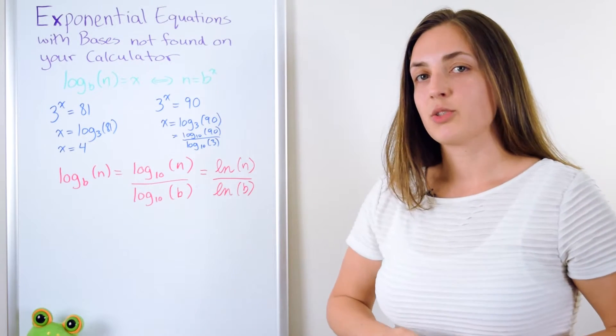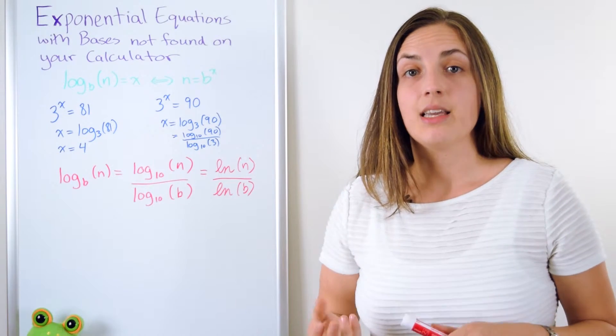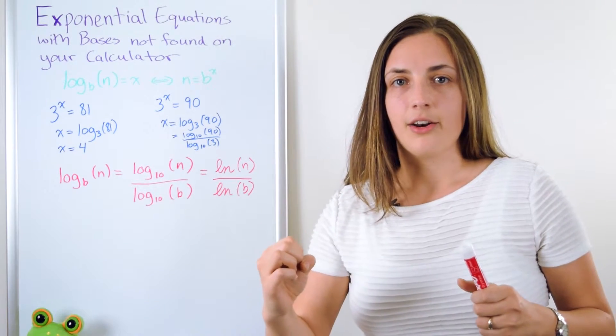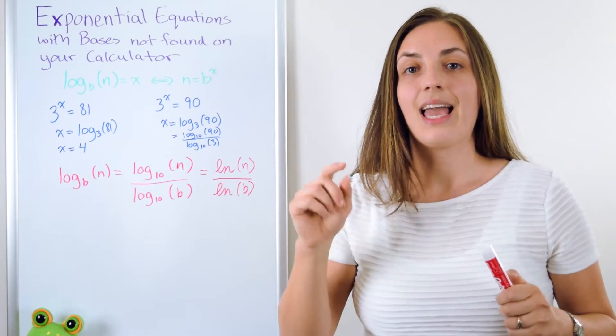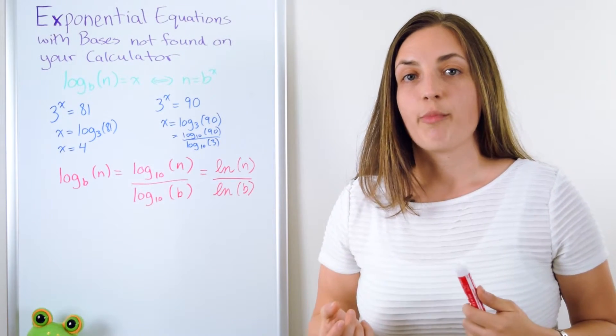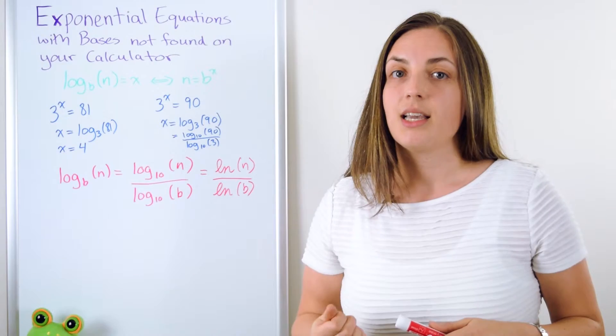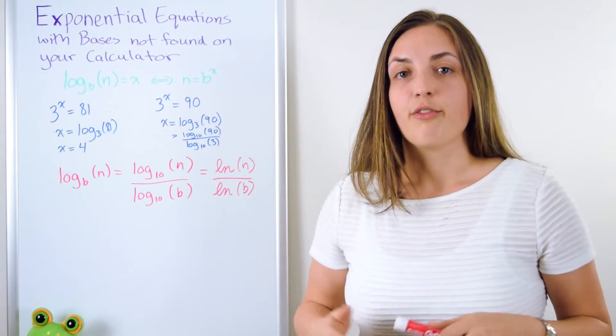When I use the change of base rule and I go into base e, we don't write log with a little e underneath. Instead, we write ln. So when I use the change of base rule and I'm using base e, I just write ln of n divided by ln of b.